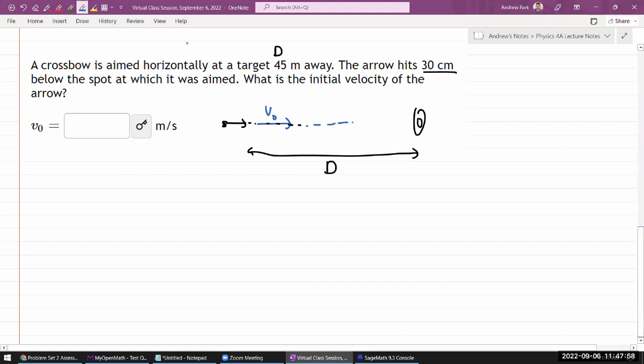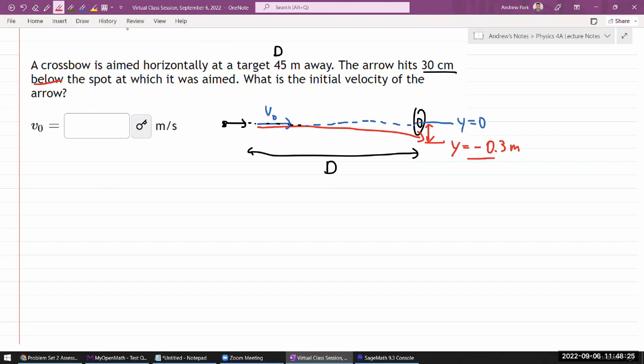And it says the arrow hits 30 centimeters below the spot at which it was aimed. So I think what it means is, this is the spot where it was aimed, let's say y is equal to zero here, and where it actually hit after traveling this distance, it's somewhere here. Since it says below, I'm going to say y is equal to minus 0.3 meter. I'm also taking care of direction and putting in the unit. And it asks, what is the initial velocity of the arrow?